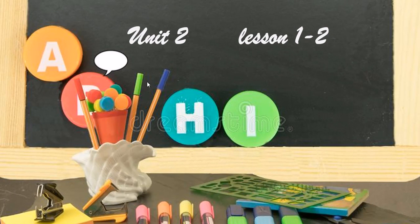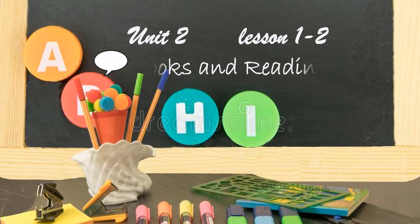Hello, my dear students, welcome back! Today we're going to talk about Unit 2, Lesson 1 and 2 for Prep 3 students. The title is 'Books and Reading.' We have here a conversation between a boy and a girl, and they are talking about books and reading. Let's listen together to this conversation.